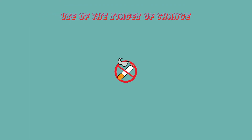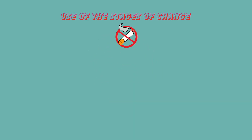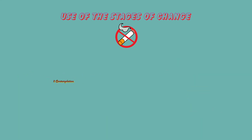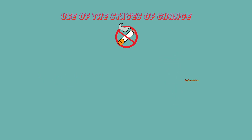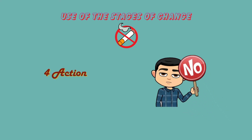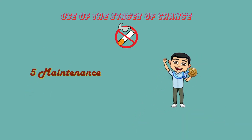Use of the stages of change: if we use this model to stop smoking, the model would suggest the following sets of beliefs and behaviors at the different stages. Pre-contemplation: I am happy being a smoker and intend to continue smoking. Contemplation: I have been coughing a lot recently, perhaps I should think about stopping smoking. Preparation: I will stop going to the pub and will buy lower-tar cigarettes. Action: I have stopped smoking. Maintenance: I have stopped smoking for four months now.